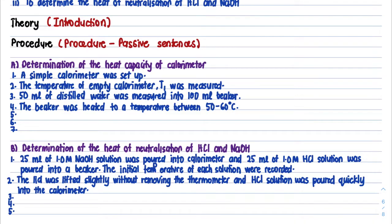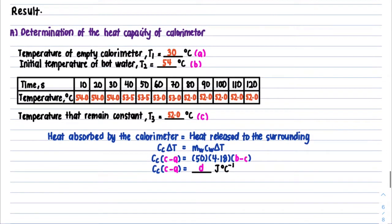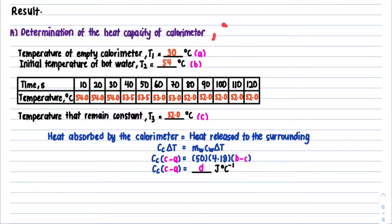When you look at the experiment from the video, the KMPK video is under 6 minutes — about 5 minutes something. So this experiment is very simple. The complicated part is actually the calculation. For Part A — determination of the heat capacity of the calorimeter, which is our CC — based upon the information given, we have all the temperatures.